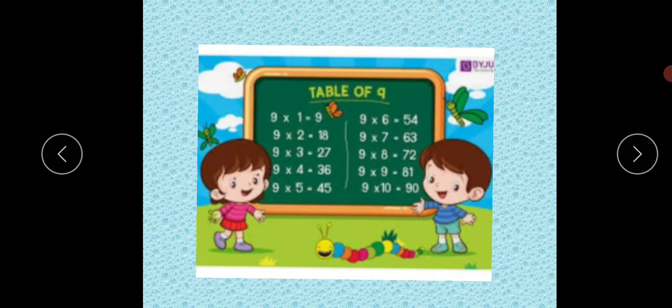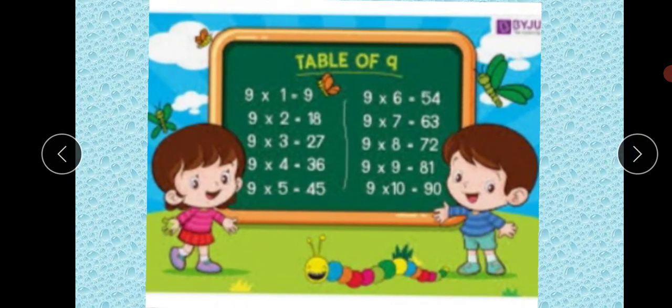The next one is table of 9. 9 ones are 9. 9 twos are 18. 9 threes are 27. 9 fours are 36. 9 fives are 45.